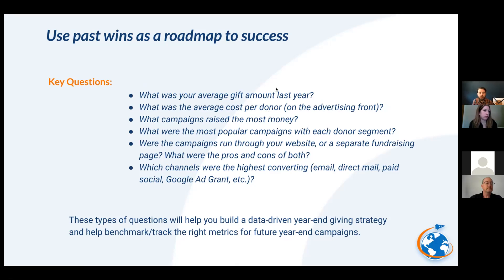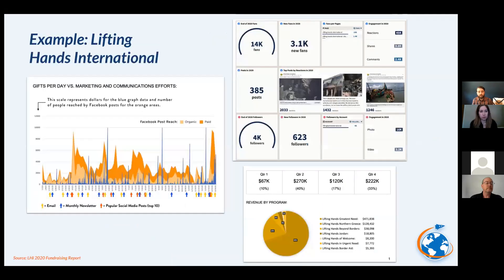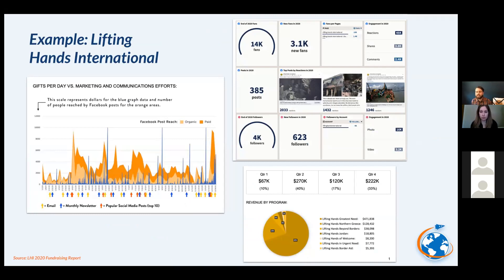These questions help you build a data-driven year-end giving strategy and, most importantly, help you benchmark and track the success of future campaigns. I want to share an example from one of my partners from 2020 — Lifting Hands International, an amazing organization supporting refugees in Greece from Syria and other areas. It was their first time running a deep Facebook advertising campaign. Between October, November, and December, we spent around five to ten thousand dollars on advertising.